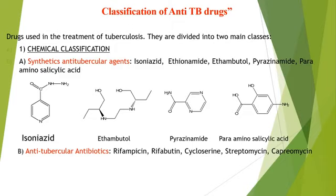The synthetic anti-tubercular agents include isoniazid, ethionamide, ethambutol, pyrazinamide, and para-aminosalicylic acid. You can see the structures of isoniazid, ethambutol, pyrazinamide, and para-aminosalicylic acid, which are very important drugs. The anti-tubercular antibiotics include rifampicin, rifabutin, cycloserine, streptomycin, and capreomycin.